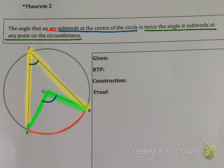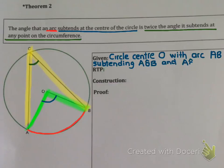So how do we prove this? Well first of all let's write down what we're given. We're given circle center O with arc AB and this arc subtends AOB which is at the center and ACB which is at the circumference. What are we trying to prove? We're trying to prove the angle at the center AOB is twice that at the circumference which is ACB.